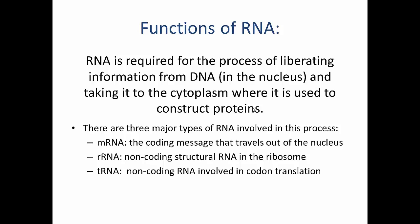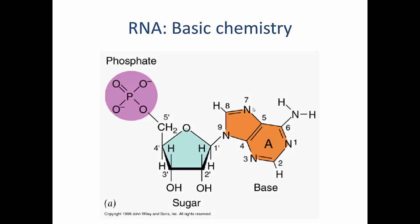RNA differs from DNA in one very subtle group change. The base, sugar, and phosphate moiety of the RNA nucleotide are similar, but the difference is on the two-prime carbon of the sugar: there is a hydroxyl group instead of a hydrogen. So in DNA you have a hydrogen there; in RNA you have an OH. The numbering convention for sugars in RNA is the same as in DNA: the one-prime carbon has a base attached, the two-prime carbon in RNA has an OH, the three-prime carbon has the OH required for condensation of the next nucleotide, the four-prime carbon, and the five-prime carbon has the phosphate moiety attached.